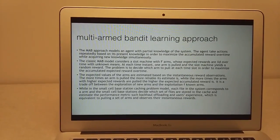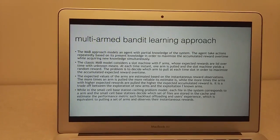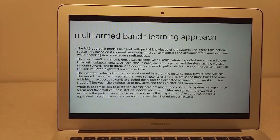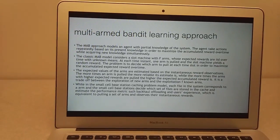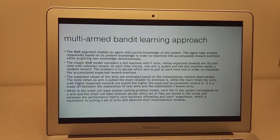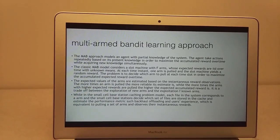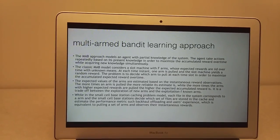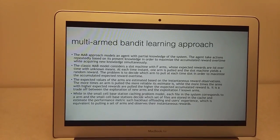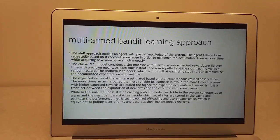In the small cell base station caching problem model, each file in the system corresponds to an arm. The small cell base station decides which set of files are stored in the cache and estimates the performance matrix, such as by call offloading and user's experience, which is equivalent to pulling a set of arms and observing their rewards.